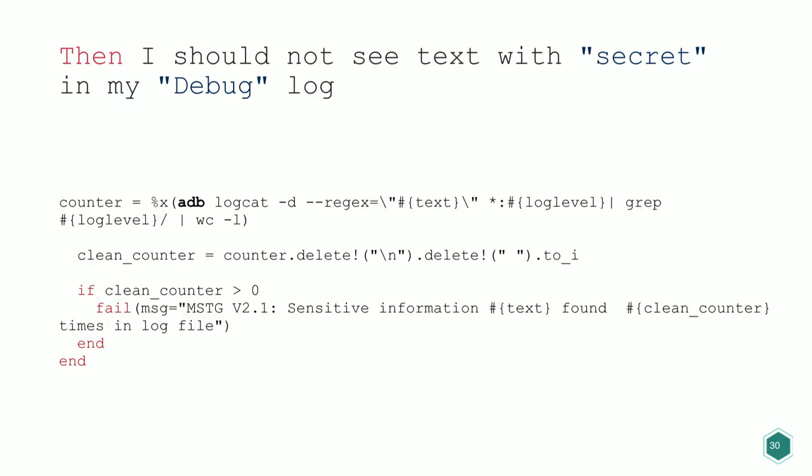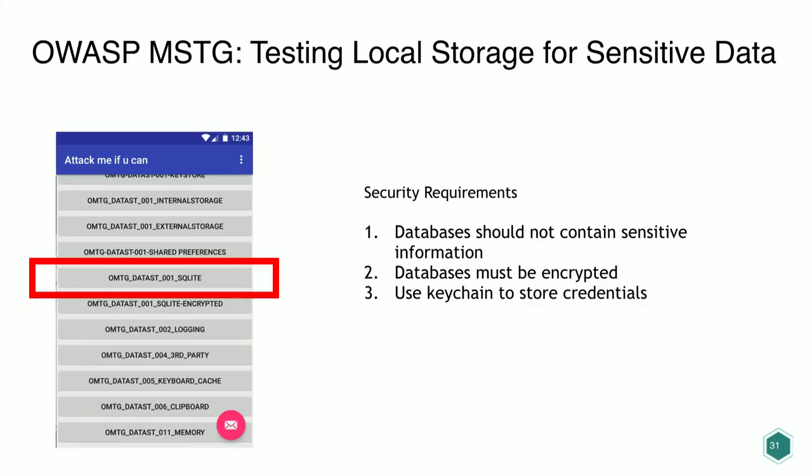The last assertion uses ADB logcat to check that sensitive information is not in the log files. It greps and counts how many instances of sensitive information are logged — if there is more than one, the test fails. The goal is that developers write tests like this for every critical function or new feature that shouldn't log information, as part of their integration tests. If everything is green, the pen tester won't need to manually check for logged sensitive data.